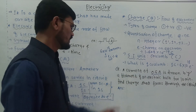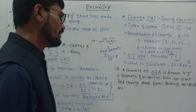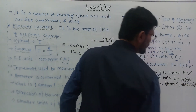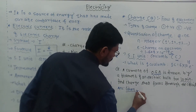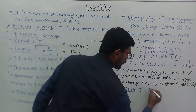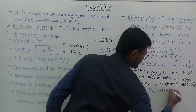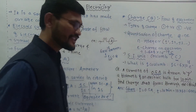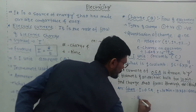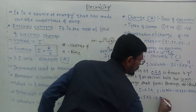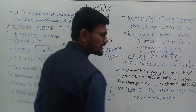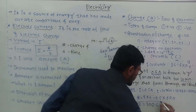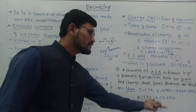Example 1: A current of 0.5 ampere is drawn by a filament of an electric bulb for 10 minutes. Find the charge that flows through the circuit. Given: I = 0.5 A, T = 10 minutes = 10 × 60 = 600 seconds. Therefore Q = I × T = 0.5 × 600 = 300 coulombs. The charge flowing through the circuit is Q = 300 coulombs.